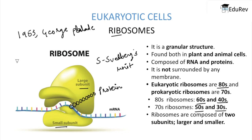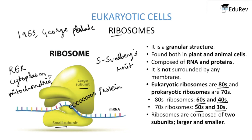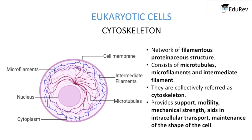Ribosomes are present on the rough endoplasmic reticulum, in the cytoplasm, and also in the mitochondria. The cytoskeleton is a network of filamentous proteinaceous structures present in the cytoplasm, consisting of microfilaments, intermediate filaments, and microtubules, collectively known as the cytoskeleton.